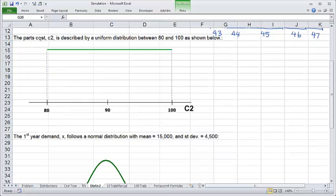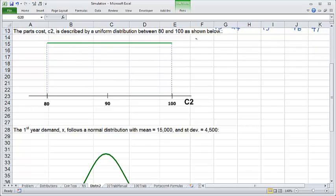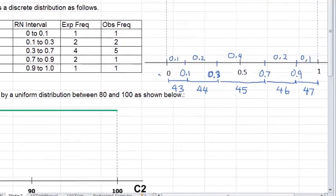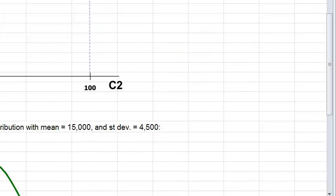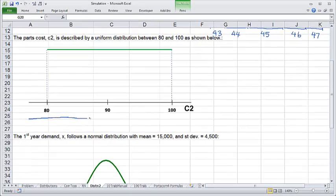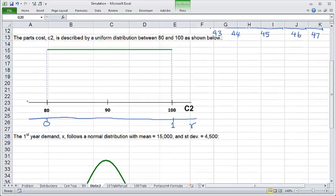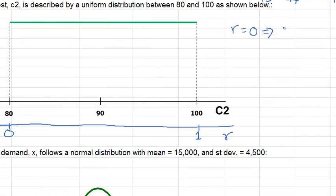Now we'll see how to generate the parts cost that has a uniform distribution between 80 and 100. Notice that the parts cost has a uniform distribution, just like the random numbers from Excel. So all you have to do is just use a different scale. We just draw another scale here that starts at 0 and ends at 1. This scale would correspond to the random number from Excel. Suppose you get random number 0 from Excel, then the parts cost would be 80.